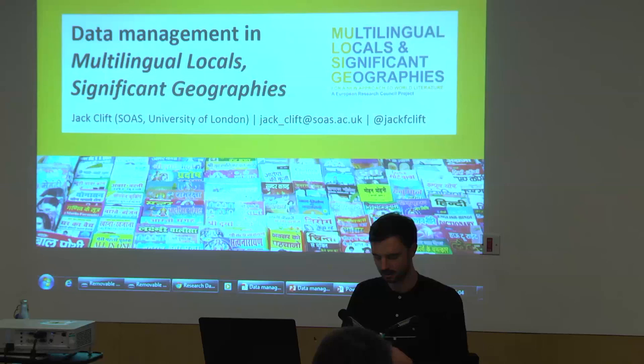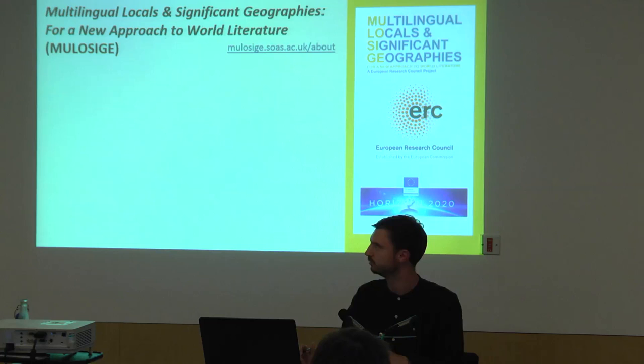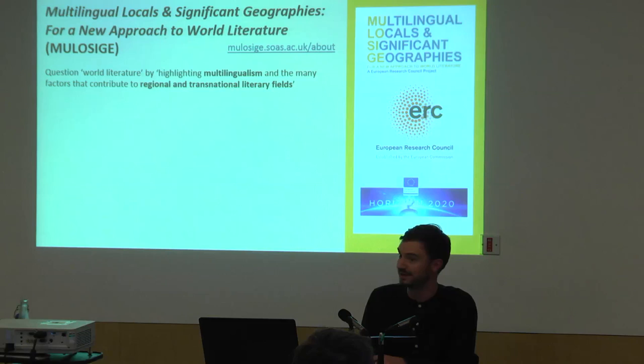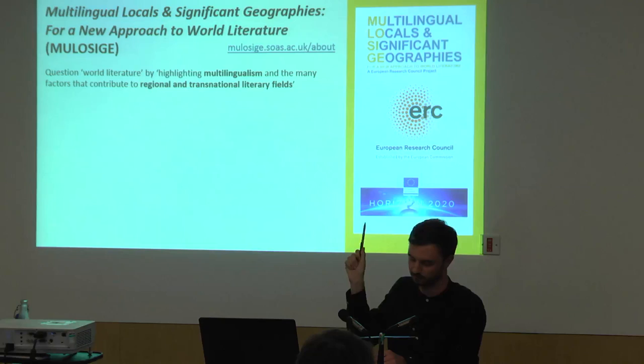Multilingual Local Significant Geographies is a European Commission Horizon 2020 scheme, often abbreviated to Milosogy. The project brings into question the status of world literature as a discipline and the dominance of hegemonic languages within it, such as French, English and German, by highlighting the multilingualism and the many factors that contribute to regional and transnational literary fields. I'll be quoting here from the project description on our website, which I've included the URL for.